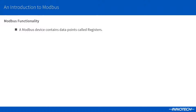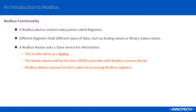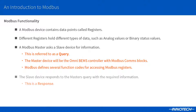A Modbus device holds data values in storage areas called registers. Different types of registers hold different types of data and offer various functionality. A Modbus master device asks or queries a connected slave device for information held in the registers. In our project the Modbus master will be the Omni BEMS controller. The slave responds back with the information asked by the master.